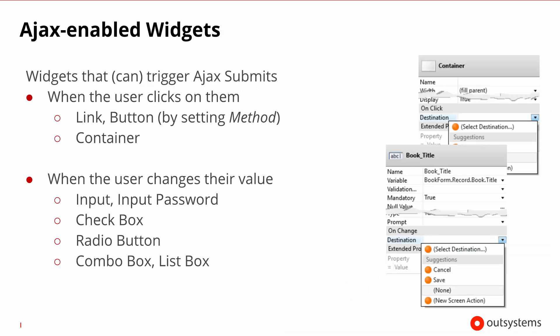The kind of interaction that the user has with the widget that can optionally trigger an Ajax behavior changes according to the widget type. The most obvious one is when you click a link or a button, but you can also interact with a container and on clicking it trigger an Ajax request. For input widgets such as the input, input password, checkbox, radios, and combos, the operation that can optionally trigger an Ajax request is not the click but the change of a value. So you can trigger an Ajax request every time a user types something into an input or clicks a radio button.